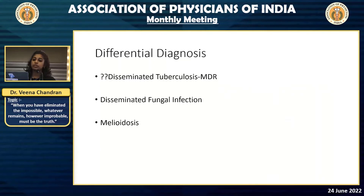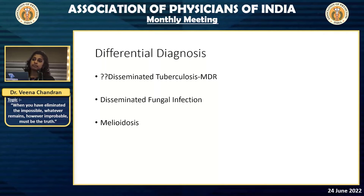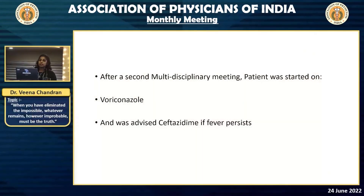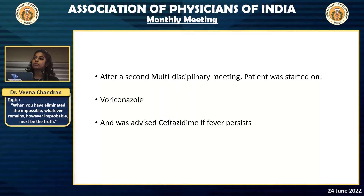At this point we had essentially ruled out disseminated tuberculosis, but MDR tuberculosis remained a possibility and we didn't want to completely exclude TB given his history. The next possibility was a disseminated fungal infection; melioidosis was still on the table. By this time, the patient had completed around two weeks of ATT with absolutely no signs of improvement — CRP levels were consistently high and fever spikes showed no difference. We held a second multidisciplinary meeting and started the patient on voriconazole for possible disseminated fungal infection, keeping ceftazidime in reserve if fevers persisted.